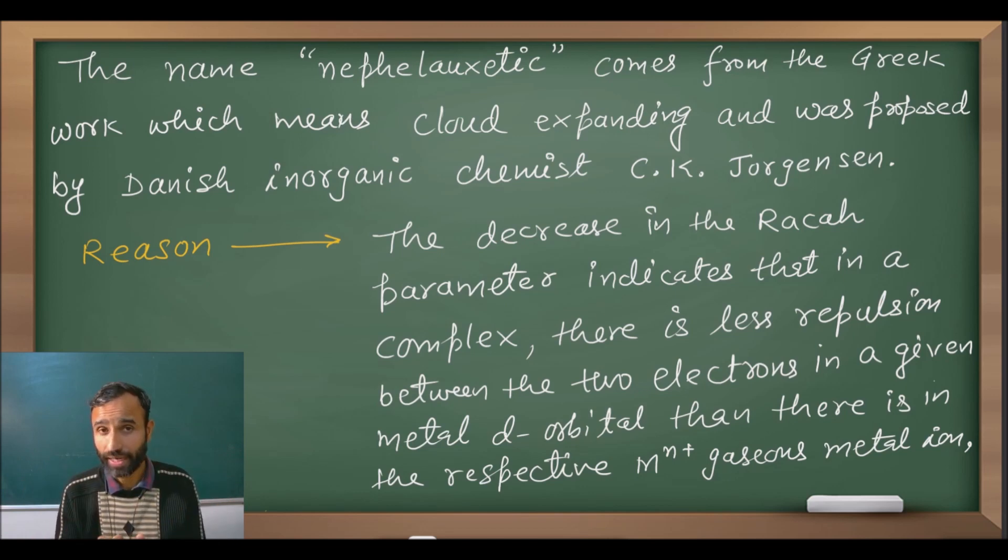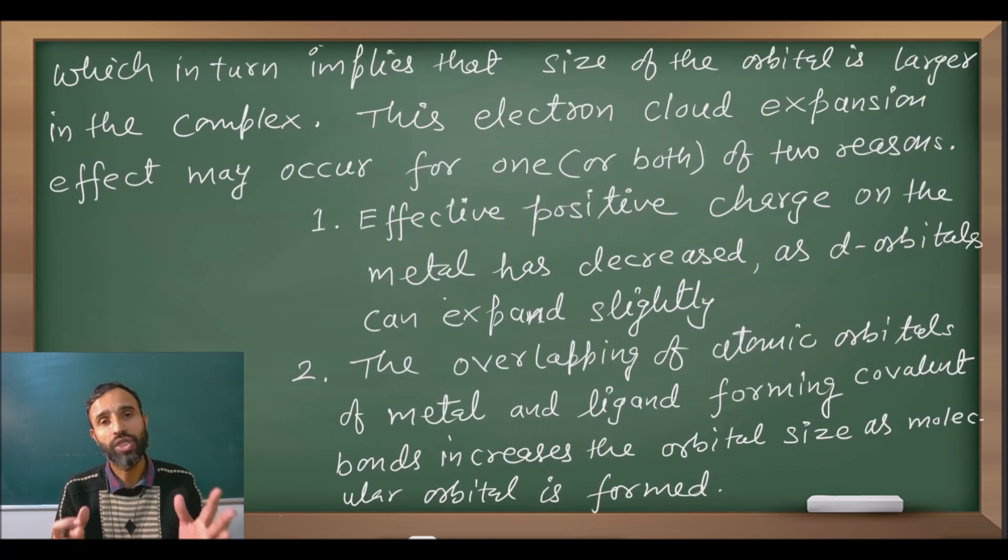Because of that, more distance between the two electrons in the same orbital, the inter-electronic repulsion between them decreases, and that is called cloud expanding. So decrease in Racah parameter means decrease in inter-electronic repulsion between the two electrons in the same orbital. Initially it is in the free metal ion orbital, that is the atomic orbital. When it attaches with the ligand from the complex, the metal orbital and ligand orbital combine linearly to form molecular orbital, and that molecular orbital is larger in size. That's why repulsion between the two electrons decreases because the distance between them increases, which implies size of the orbital is larger in the complex.